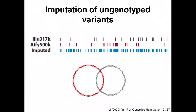Two principles that help achieve larger sample sizes are imputation and meta-analysis. The principle behind imputation is that if one study has tested variants across the genome using one array, and another study used a different genotyping array, we can combine these data by imputing or predicting genotypes at a much denser set of variants across the genome. If each study can impute this greater set of variants, instead of only the subset that overlaps between the two studies, we can analyze a much larger subset of variants.